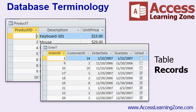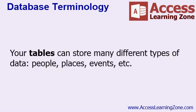You might not always be storing customers. In a product table, for example, each record would represent one product. In an order table, each record would represent one order. In a timesheet table, each record might represent one instance of an employee clocking in or out. So your tables can store many different types of data — people, places, events, and so on.